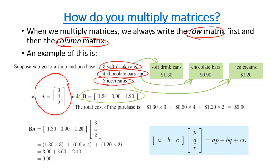Now, if we're going to work out the total purchase of this using what we'd consider ordinary mathematics, it would look something like this, where we've multiplied the cost by the number of items we've purchased, and that would give us our total value of $9.90.